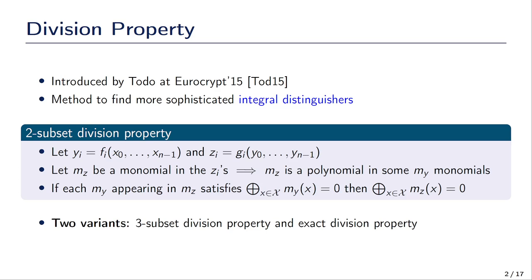There are also two extra variants. The first is the three-subset division property, which has a third subset where monomials sum to one. In that case, if each m_y sums to zero but one, then m_z sums to one. We also have the exact division property, where we count how many m_y sum to one, and m_z sums to zero if and only if that number is even.